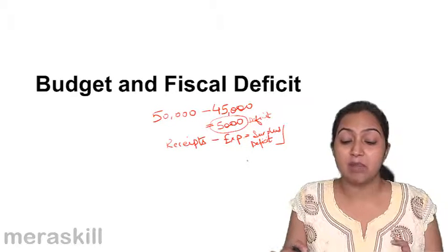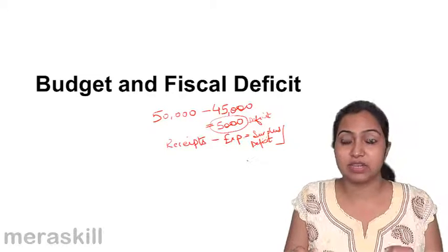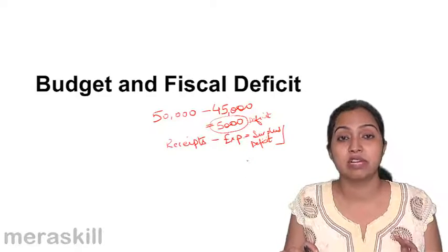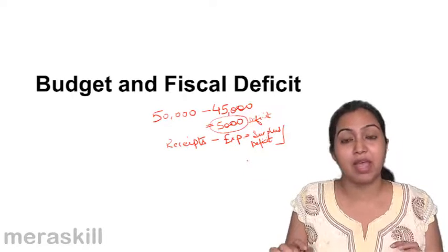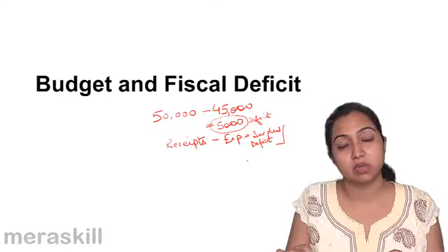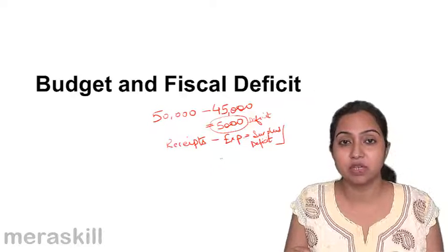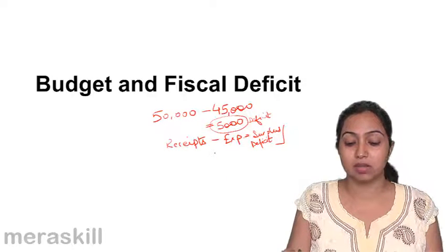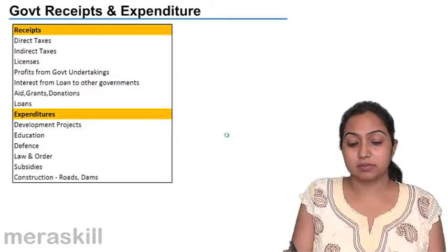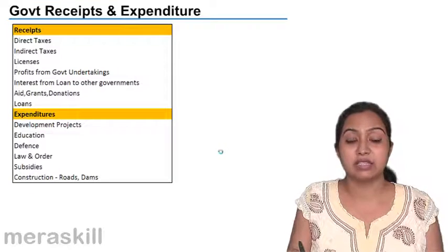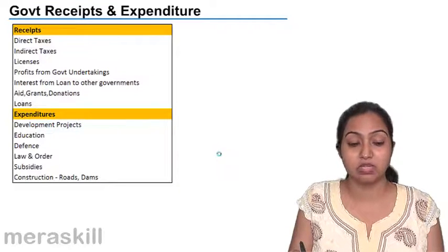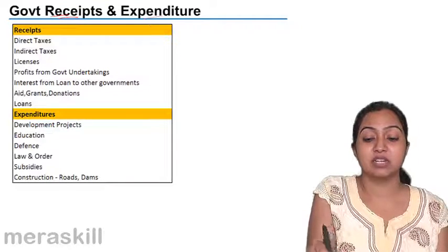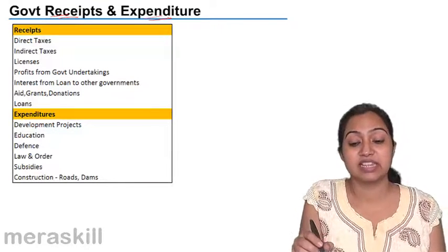Now, when I am talking about a family, you can easily calculate this. But when I talk about a country, the magnitude definitely becomes big. And we are going to talk about this only today — the budget made by the government of India and the terms associated with it. So first, let us understand what are the earnings of the government, what are the government receipts, and where exactly the government spends — what are its expenditures.